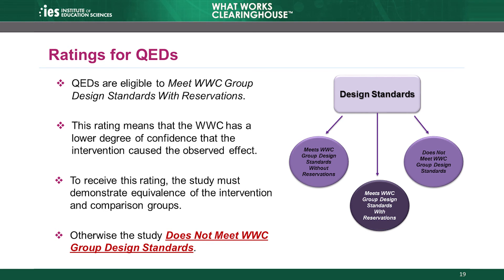The highest rating a QED can receive is meets WWC group design standards with reservations. This rating means that the WWC has a lower degree of confidence that the intervention caused the observed effect relative to an RCT. However, to receive this rating, the study must demonstrate that the groups were equivalent on baseline characteristics. We'll discuss baseline equivalence in the baseline equivalence module, which is Module 3. QEDs that do not demonstrate equivalence receive the does not meet WWC group design standards rating.